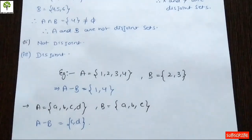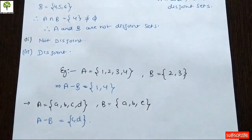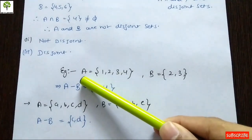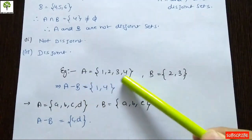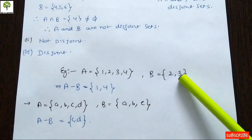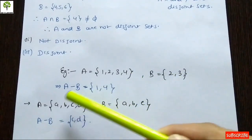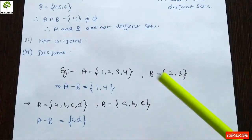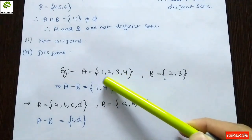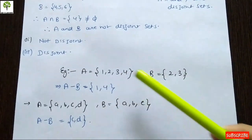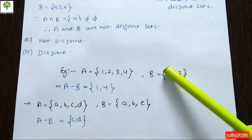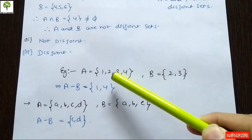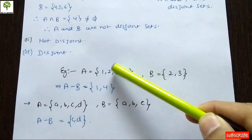Now we can understand set subtraction. If we have two sets, for example A = {1, 2, 3, 4} and B = {2, 3}, then if we do A minus B, we subtract the elements of B from A. The answer will be the elements remaining in A after removing the common elements. So A minus B gives us the elements of A that are not in B.